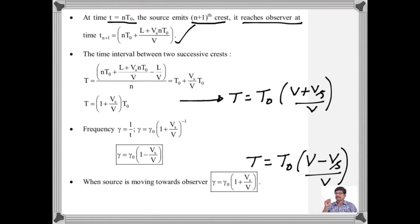We can generalize it. The time interval between two successive waves — that is, the time period as observed by the observer — if I simplify, I will get T₀ + (Vs/V)·T₀. That is, the time period of the sound as observed by the observer is equal to T₀ · (V + Vs)/V, where V is the velocity of sound, Vs is the velocity of the source, and T₀ is the time period of the source sound.